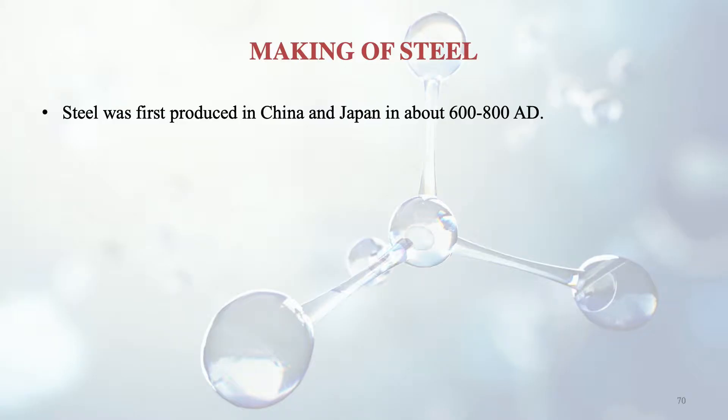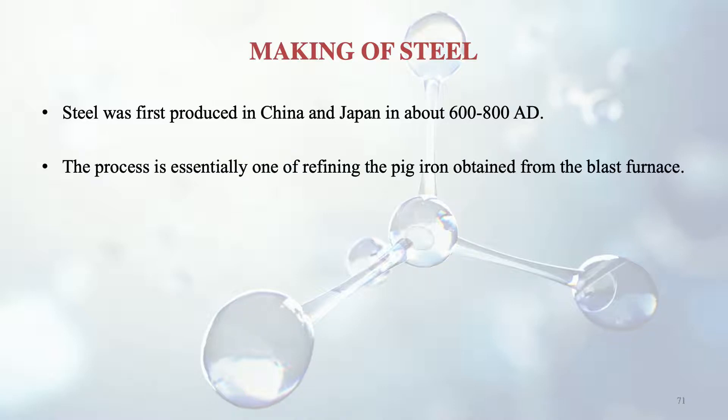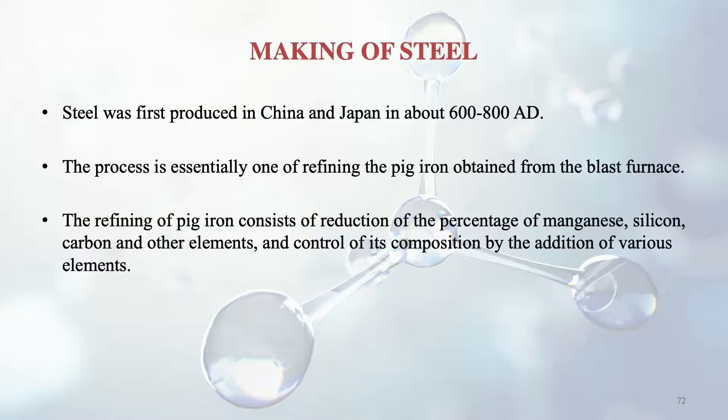Steel was first produced in China and Japan around 600 to 800 AD. The process is essentially one of refining the pig iron obtained from the blast furnace. The refining of pig iron consists of reduction of the percentage of manganese, silicon, carbon and other elements, and control of its composition by the addition of various elements, to finally obtain different kinds of steel.